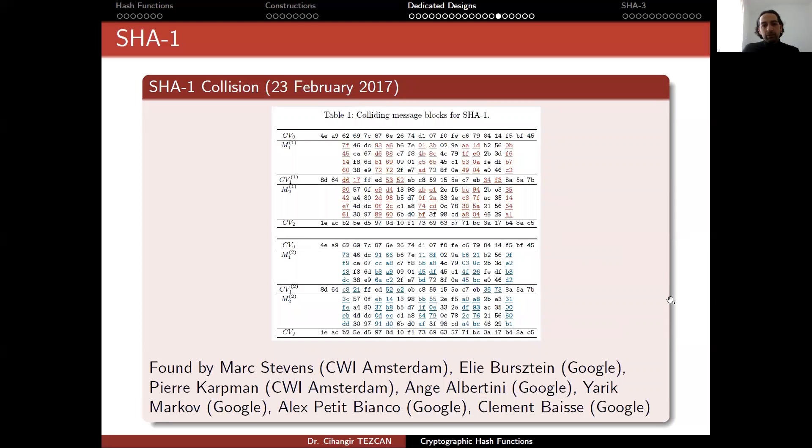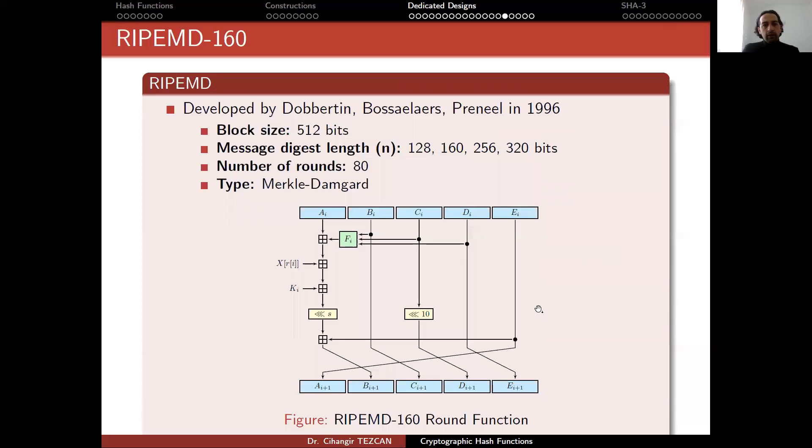This is important because although you might think that a collision wouldn't cause much of a problem, actually, a similar thing can happen that happened in the MD5. We strongly recommend everybody to stop using SHA-1 and move on to SHA-2 or SHA-3.